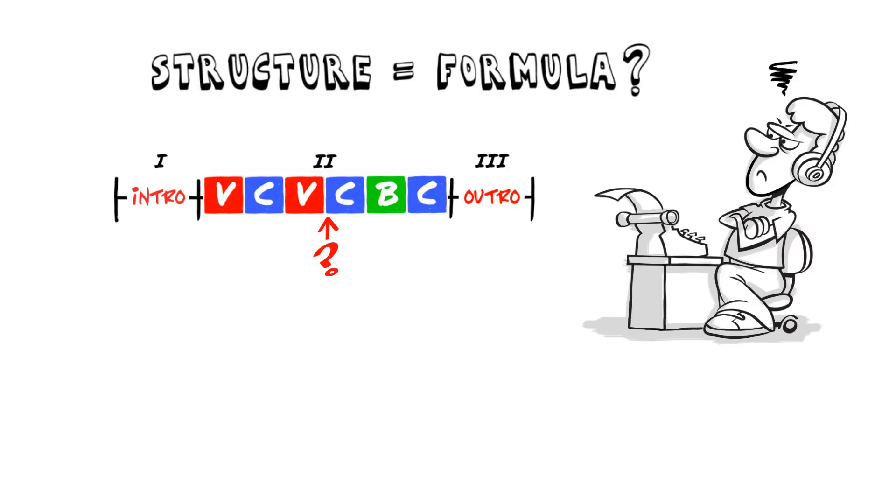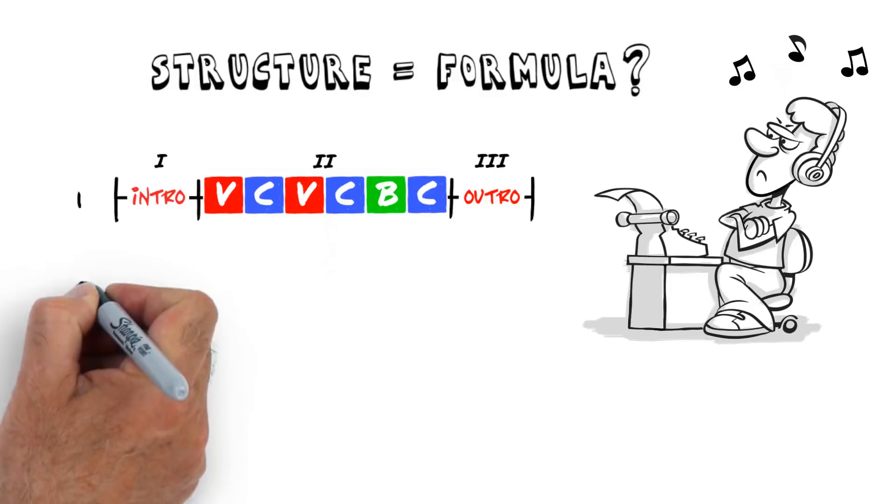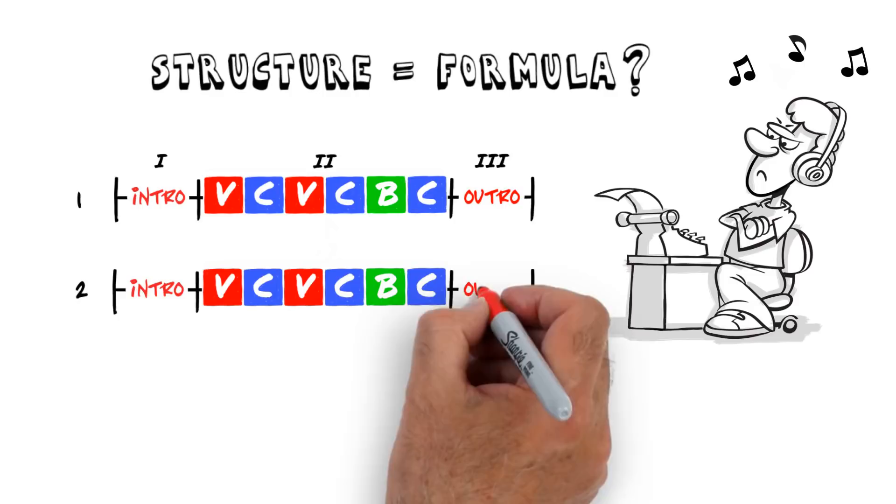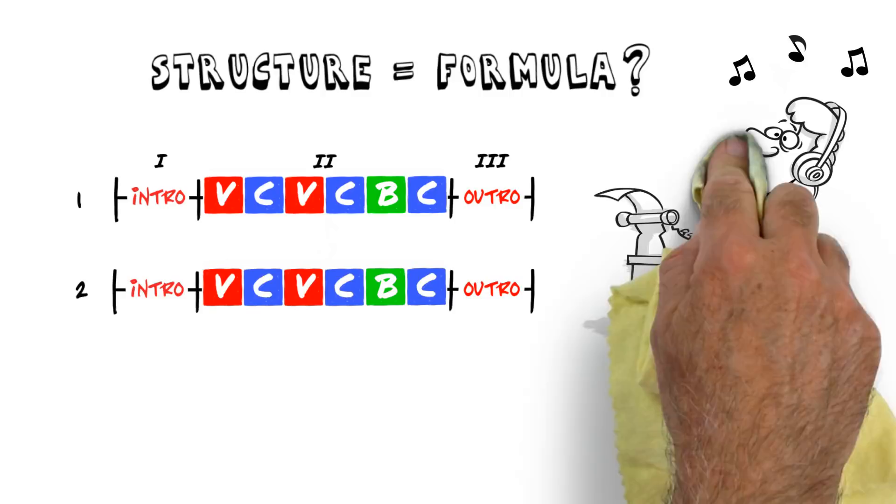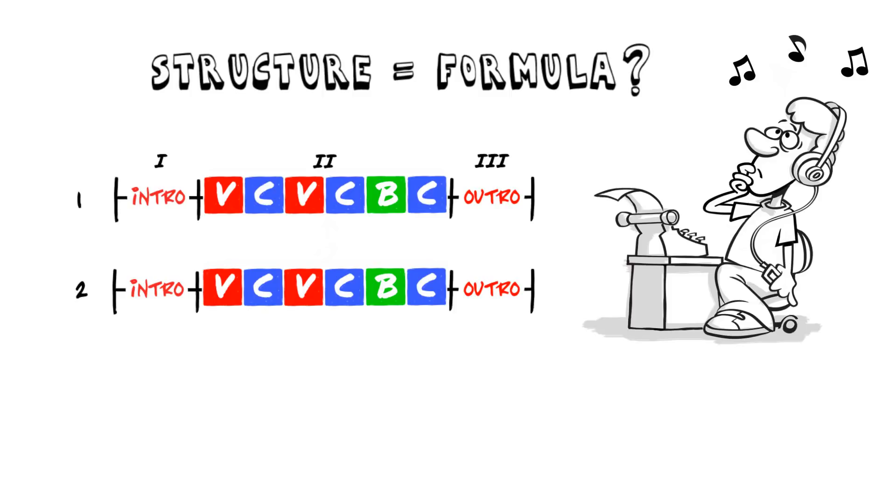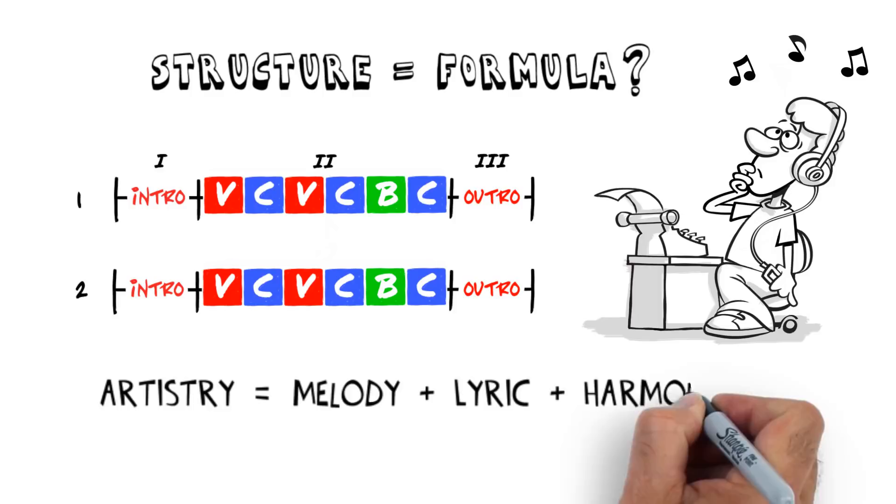Alright, so let's pick another one. Different artists, different genre, worlds apart. Now, look at that. The form is exactly the same. But wait a minute. They're completely different. Different artists, different genre, different generations even. They don't sound the same at all. The point is that artistry is not in the structure. It's in the melody, lyric, harmony, orchestration, and all these other creative elements that ride on top of a common form that holds everything together.